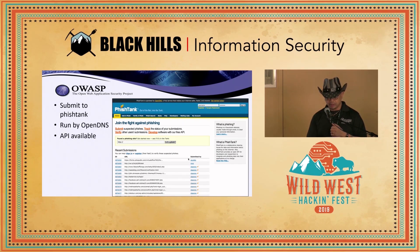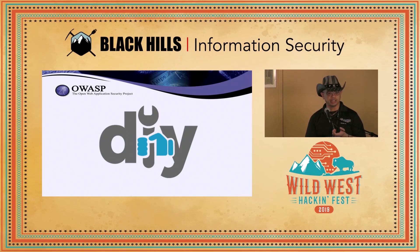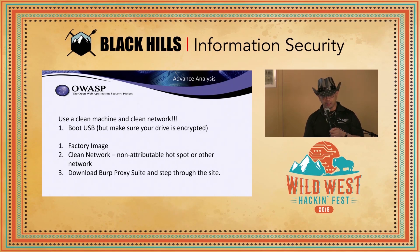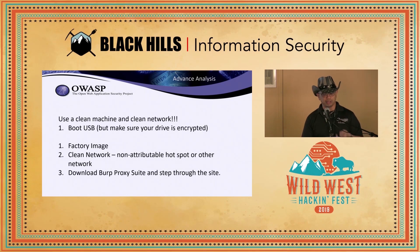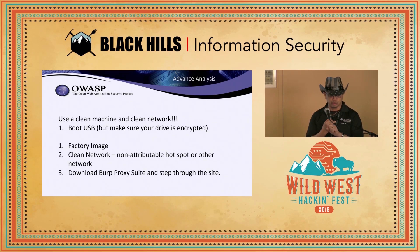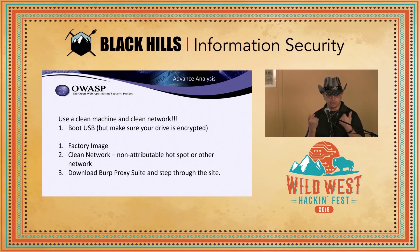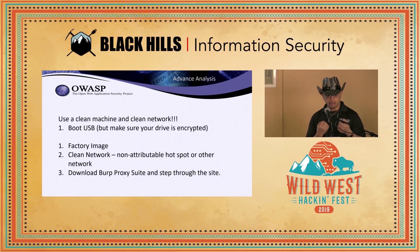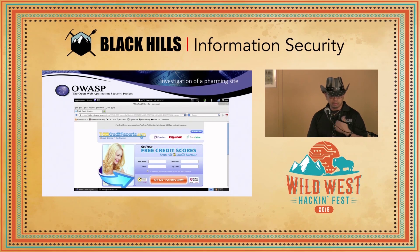I'm going to assume that most of us in this room are DIY people — we're going to want to do it ourselves. So here are some things you can do if you want to do your own forensics. First off, use a clean machine and a clean network. Do not try to do forensic analysis from your home network or even your work network. Boot from a USB, make sure the drive is encrypted, and I always use a factory image — not a company image. Clean network, non-attributable hotspot. If you ever listen to John Strand, he talks about going and buying one of those hotspot devices. And then I also download Burp Proxy Suite and step through the site.